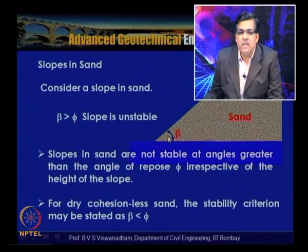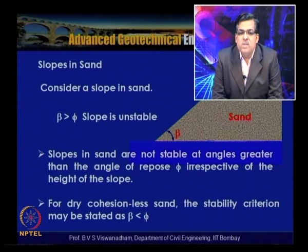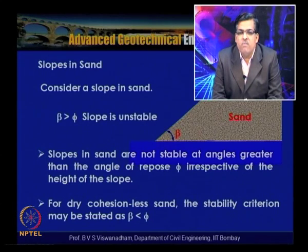For beta greater than phi — that is, for slope inclination greater than phi — the slope is unstable and takes a profile equivalent to the safe friction angle. Slopes in sand are not stable at angles greater than the angle of repose, irrespective of the height of the slope. For dry cohesionless sand the stability criterion may be stated as beta less than or equal to phi.